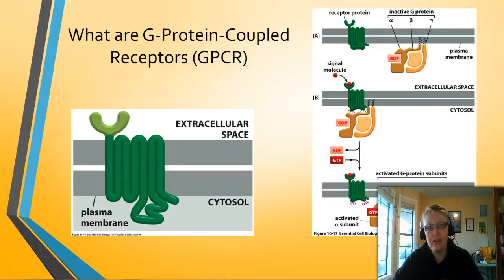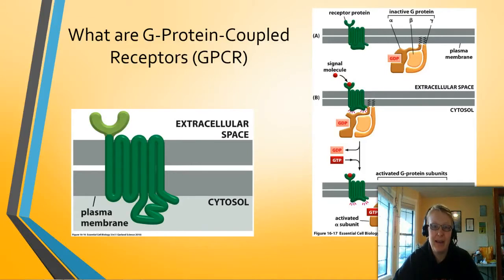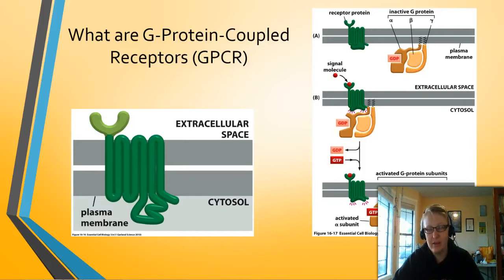We have three G-proteins: alpha, beta, and gamma, and those are normally inactivated. Once a signal is received by the receptor protein, these will become activated. It's important to know that alpha will always be activated on its own, while beta and gamma will always form a complex. Beta does not act on its own, and gamma does not act on its own — it's always the activated beta-gamma complex.